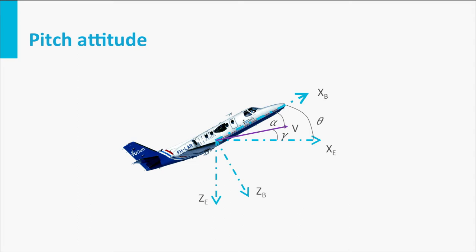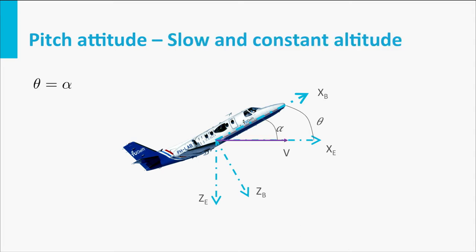Let me give an example to illustrate this. If an aircraft flies very slowly at constant altitude, gamma will equal zero and the pitch attitude equals the angle of attack. At a low airspeed, the angle of attack should be large to have sufficient lift and thus there should be a large pitch attitude